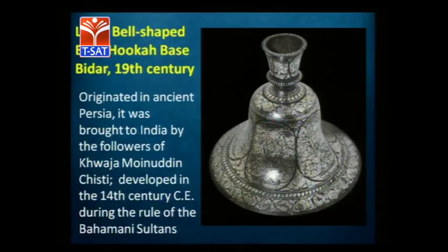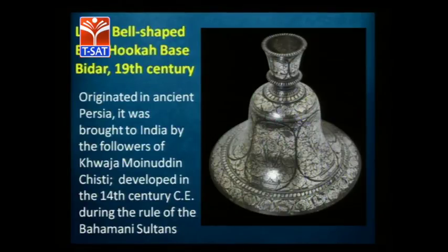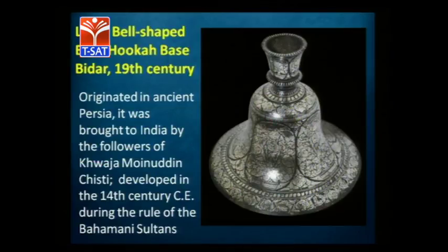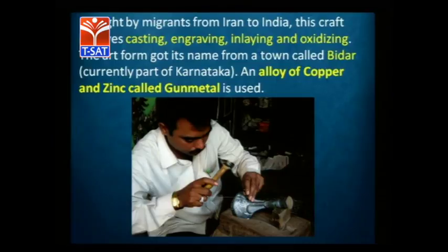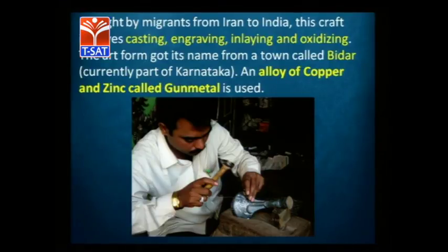Bidri is a very famous craft from Bidar in Karnataka. Bidar was in Hyderabad state before 1956, which is why it is important in the context of Telangana art and craft. It is a gun metal combination brought during the 14th century by the followers of Khwaja Moinuddin Chishti, then patronized and developed by the Bahmani sultans. It originally came from ancient Persia. The technique is an inlay process — you make the object, scoop out, and fill in. The metal is an alloy of copper and zinc, into which silver is inlaid.